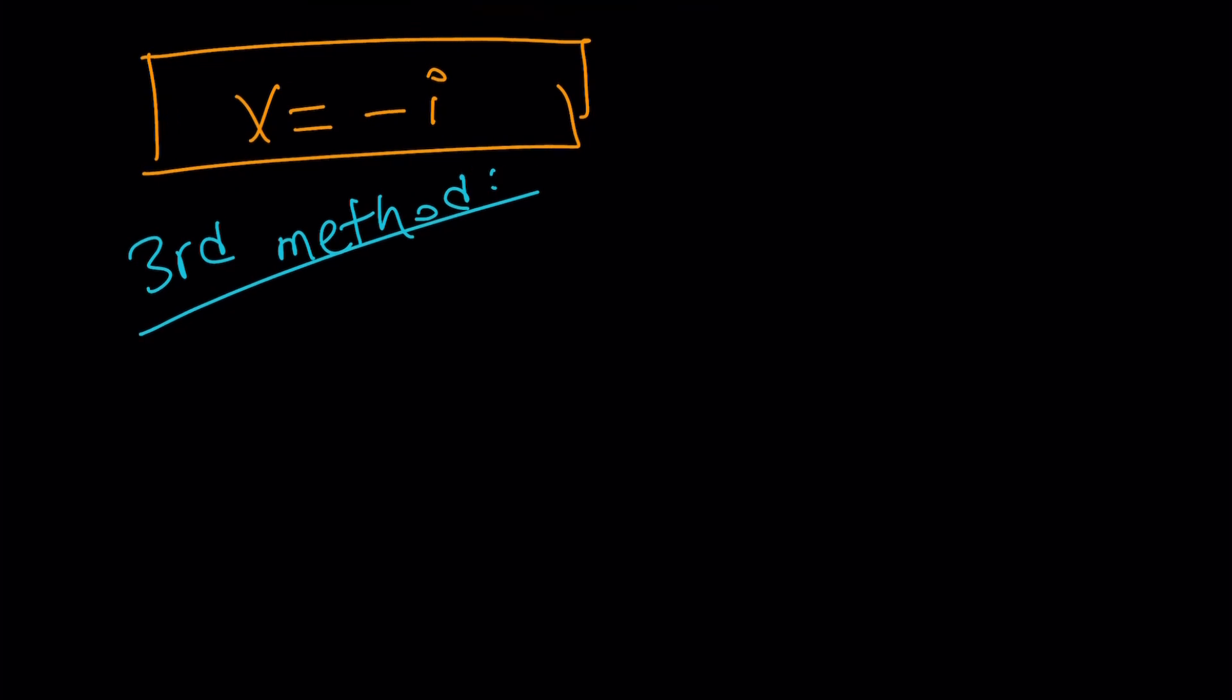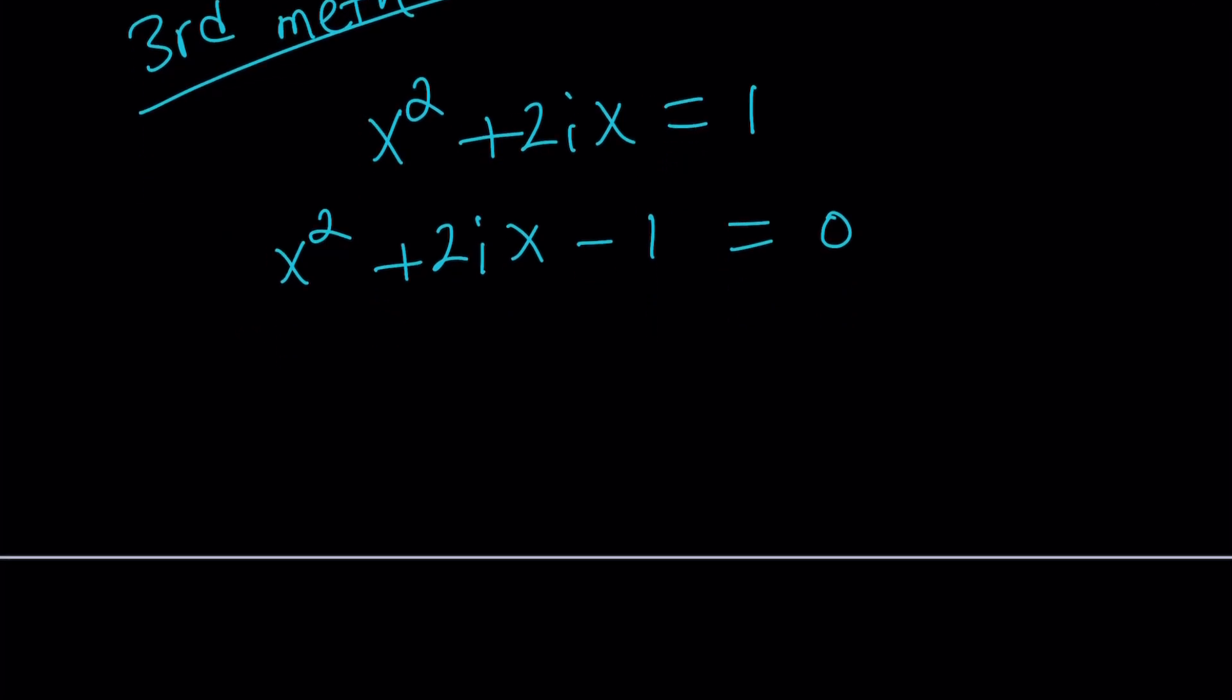So the third method is also a short one. And our original equation was x squared plus 2ix equals 1. And in this case, I'm going to not use the quadratic formula, but something that gives us the quadratic formula. And what is it called? If you said completing the square, you're right about that. Okay, great. So let's go ahead and solve it. How do we solve this?